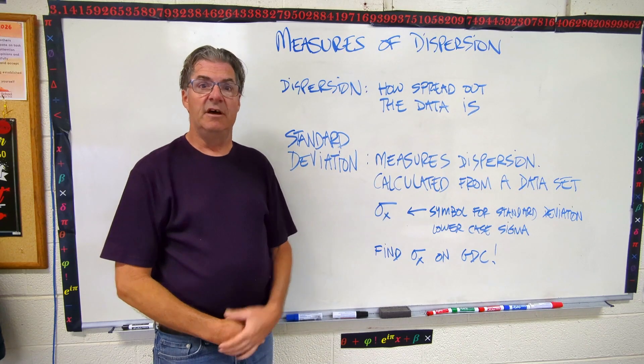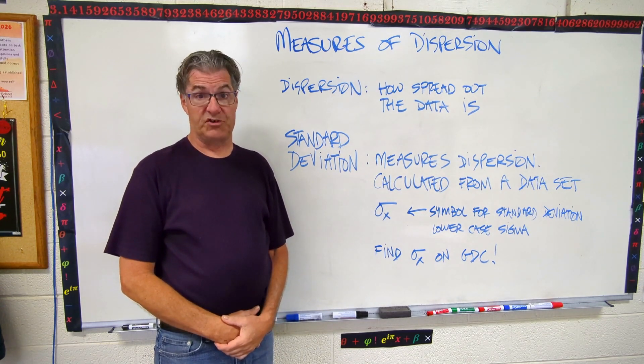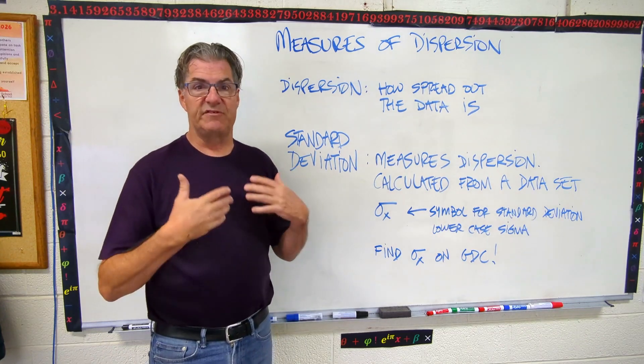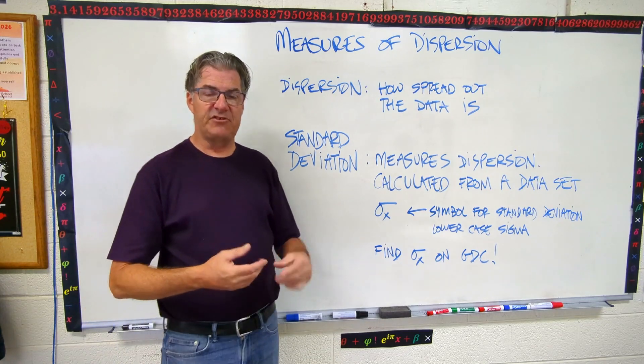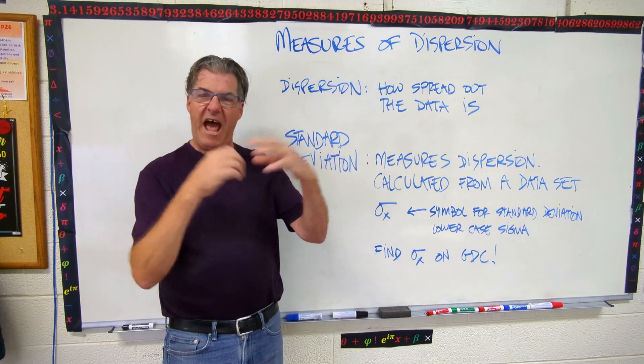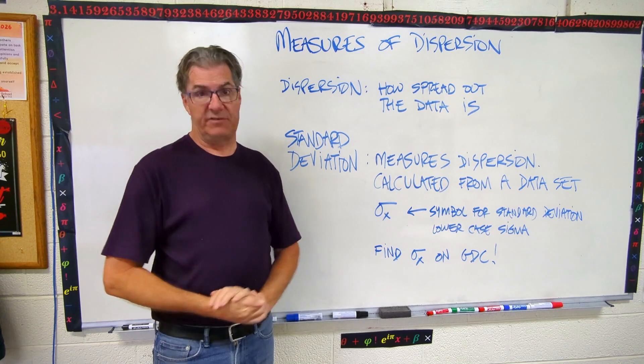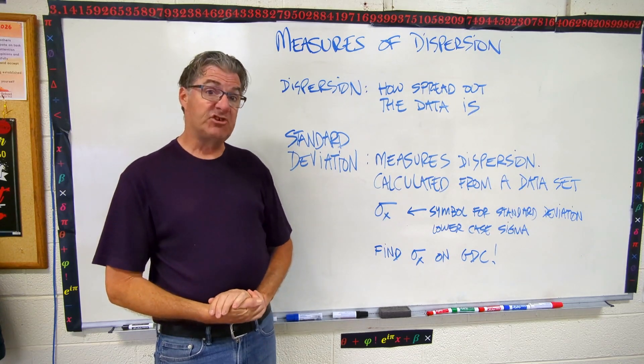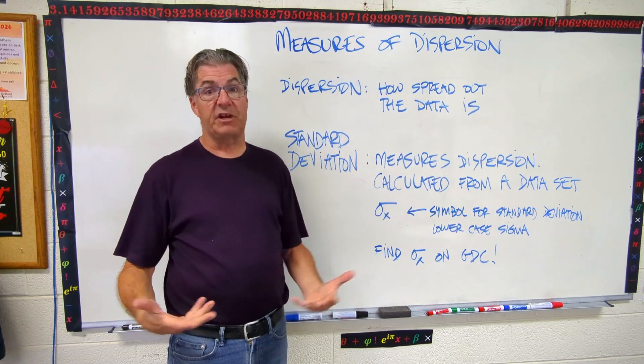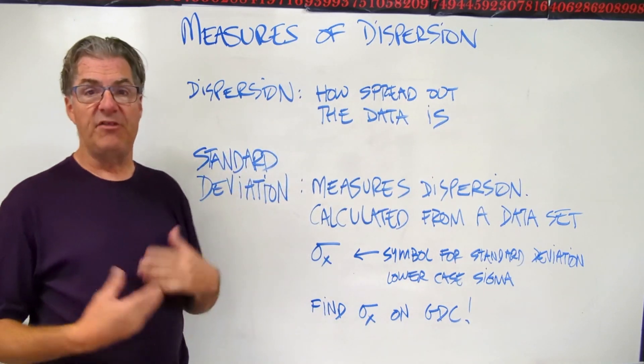Today's lesson is measures of dispersion. So far in our statistics unit, we've been covering measures of central tendency, and these are things like mean, median, and mode. We're measuring what the average is, kind of the central tendency, how the data might cluster around a certain value. Measures of dispersion measure how far the data is spread out, which is another characteristic of any data set.